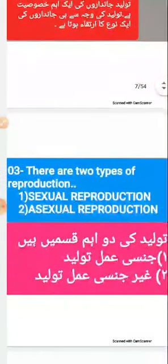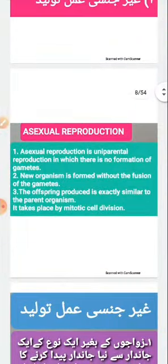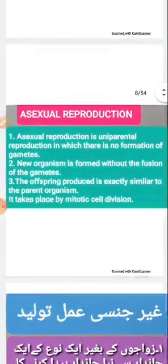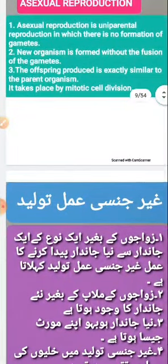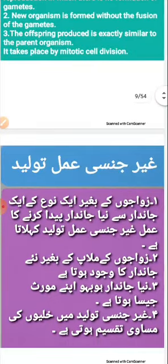There are two types of reproduction: sexual reproduction and asexual reproduction. Asexual reproduction is uniparental reproduction in which there is no formation of gametes. In asexual reproduction, a new organism is produced from a single parent without the fusion of gametes. Since there are no two gametes, there is no question of fusion.